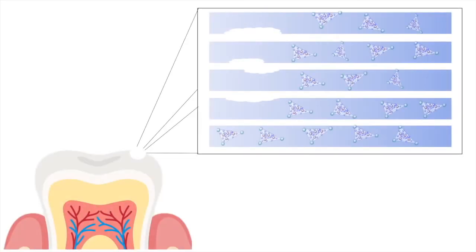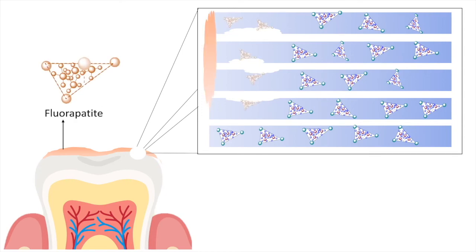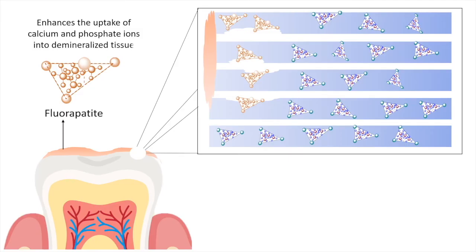Going back to the microscopic view, this was the white spot lesion which was formed by crumbling of the hydroxyapatite crystals in the presence of plaque. Now when fluoride is applied where the hydroxyapatite crystals were disintegrated, it forms fluorapatite by replacing the hydroxyl ions.